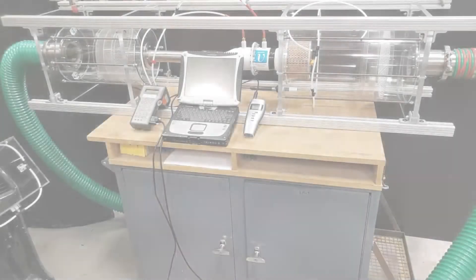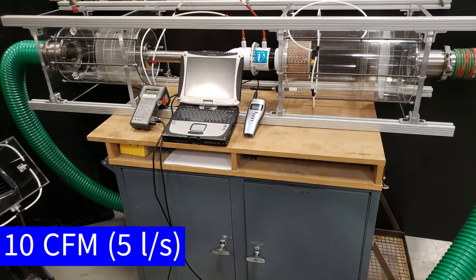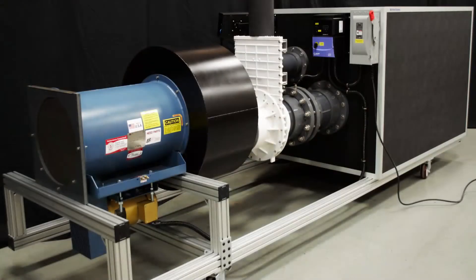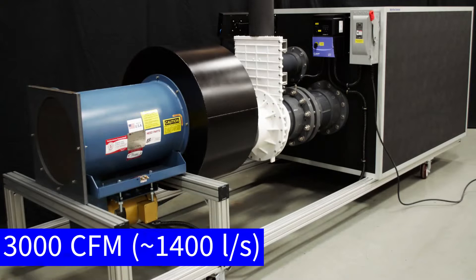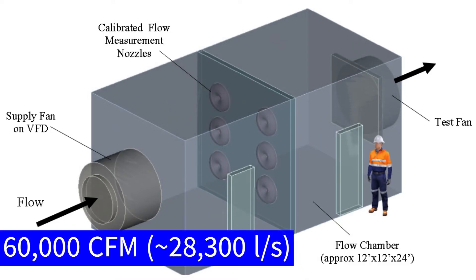Some of these tunnels measure very low flow rates — 0 to 10 CFM or 0 to 5 liters per second. Others measure very large flow rates. We've built tunnels on the order of 100 CFM, 500 CFM, 1,000, 3,000, or higher. When you get over 25,000 CFM, the tunnels are big enough to walk into.